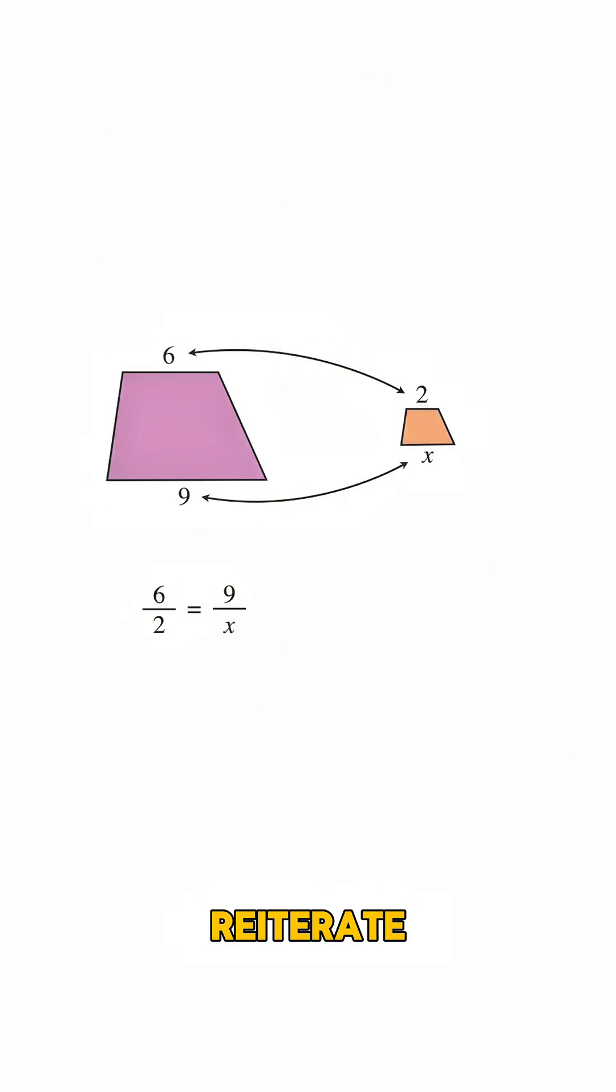So just to reiterate, this equation is saying that this side is a certain number of times longer than this side, and that should equal the number of times longer this side is than this side. And now we have an equation that you can solve for X. So what is X?